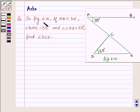In figure 6.41, if AB is parallel to DE, angle BAC is equal to 35 degrees and angle CDE is equal to 53 degrees, find angle DCE.